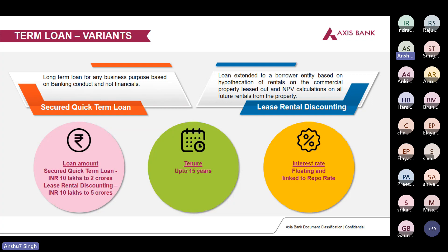For LRD — say I have a commercial property that I've rented out to an MNC. Based on the monthly rental I'm receiving from that MNC, I can get a term loan — that is what LRD is. For SQTL, loan amount is 10 lakhs to 2 crores. For lease rental discounting, loan amount is 10 lakhs to 5 crores. Tenure is up to 15 years, interest rate is floating and linked to repo rate.